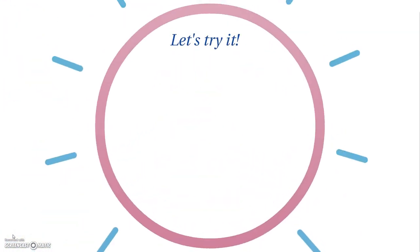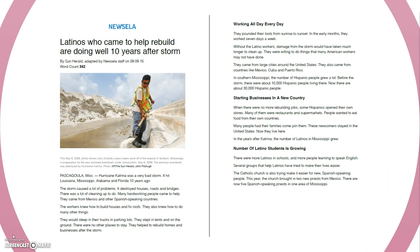So let's try it — let's look at an example together. Here we have a reading. The first thing I want to do is read the title, since the title gives you the most information the fastest. The title reads: 'Latinos who came to help rebuild are doing well 10 years after storm.' From the title I know we have some people who came or moved somewhere, it happened 10 years ago, and there was a storm. I also know this is going to be about Latinos.